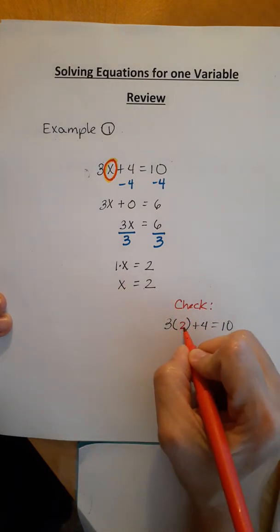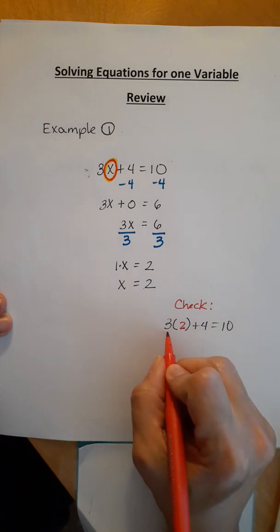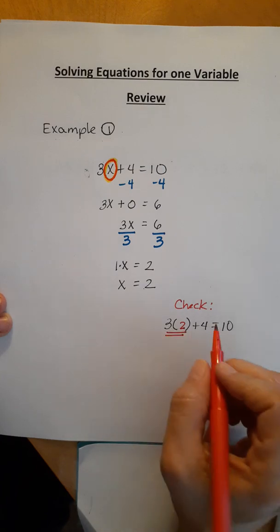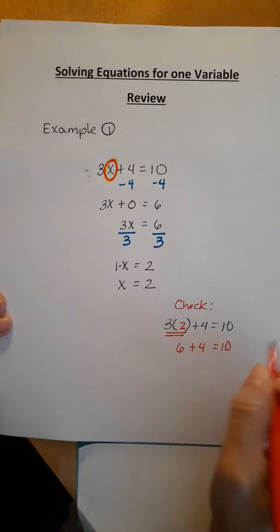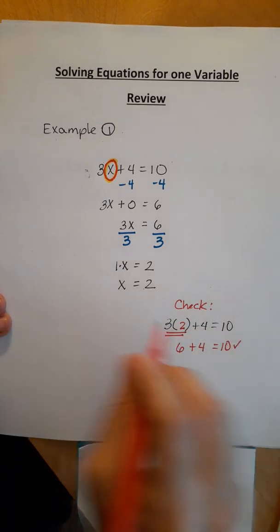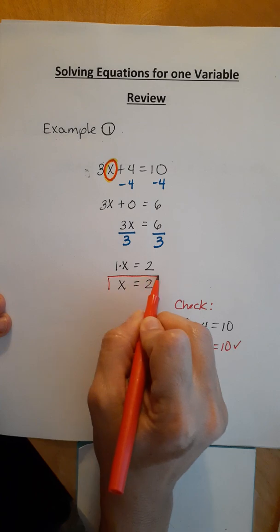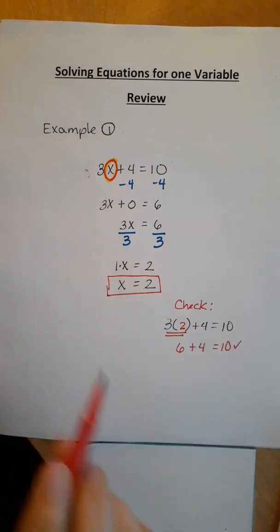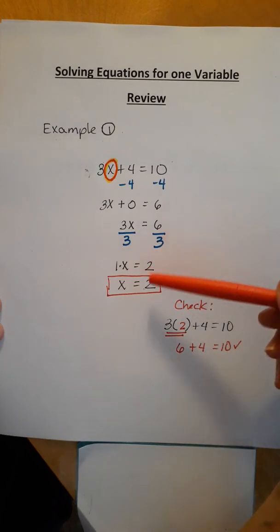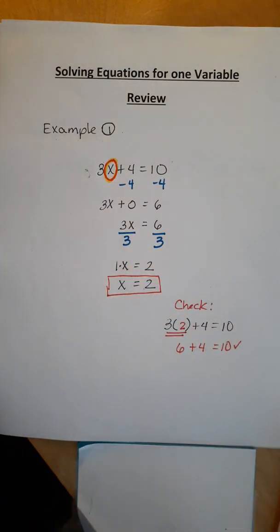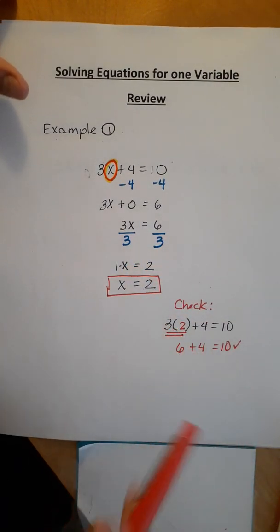So 3 times 2 plus 4 equals 10. The first thing we're going to do is multiply this. 3 times 2, 6 plus 4 equals 10. Is that a true statement? Yes, it is. So you know that this is the answer. And this is called a two-step equation. First step, second step, and then you get your answer. You can check it, and it is correct.